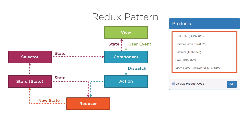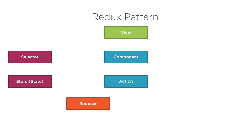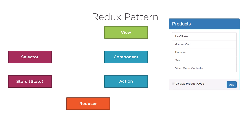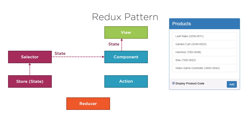In this case, the view then displays the product codes. If the user navigates away from the product list view and later navigates back, the component resubscribes, immediately obtaining the state from the store, and the view is updated with the retained user's selection.